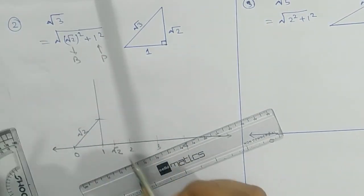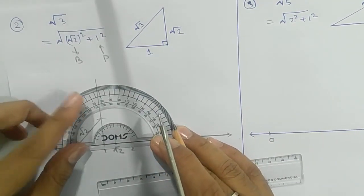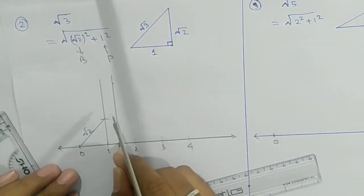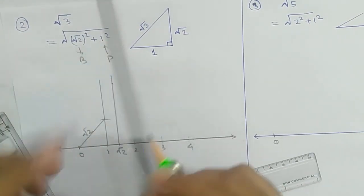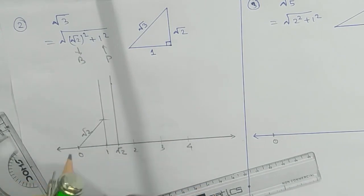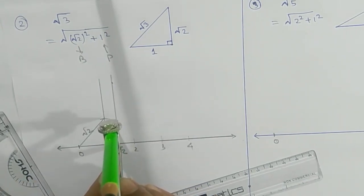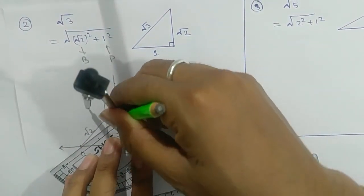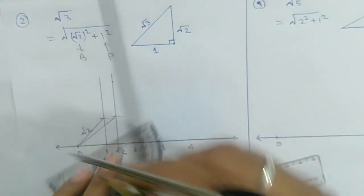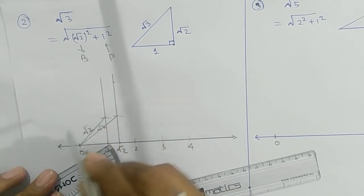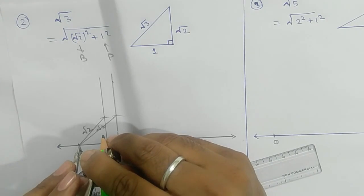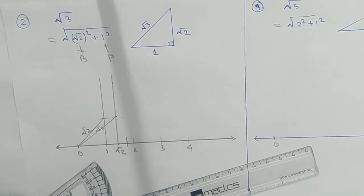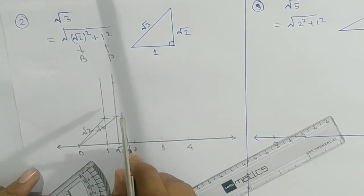On root 2, you have to take a perpendicular line — again, use the protractor to draw a perpendicular line here. Take the measurement of 0 to 1 as your one unit, put the pin point of the compass here, and mark it. Join this part. The length of this diagonal is root 3. Take the length of root 3 and draw an arc on the number line — that gives you root 3.